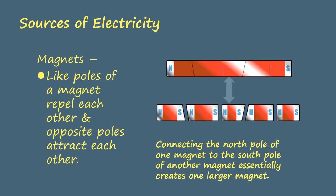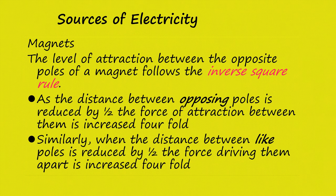Remember from physics that like electrical charges repel each other and opposite electrical charges are attracted to each other. The poles of magnets act similarly. And if we connect separate magnets north pole to south pole, we create one larger magnet. The poles of a magnet follow the same inverse square rule as do electrical charges.